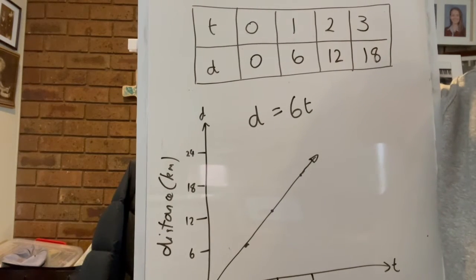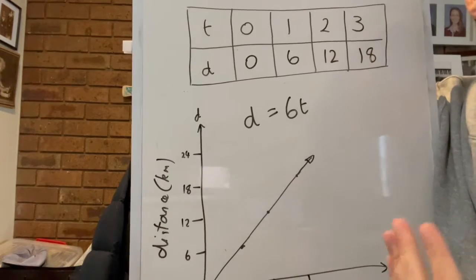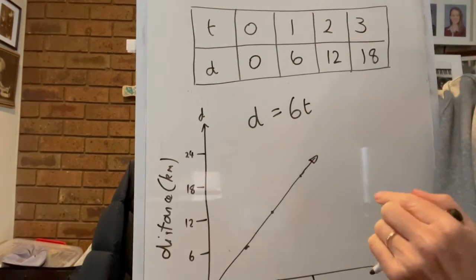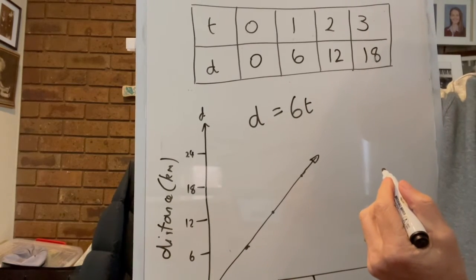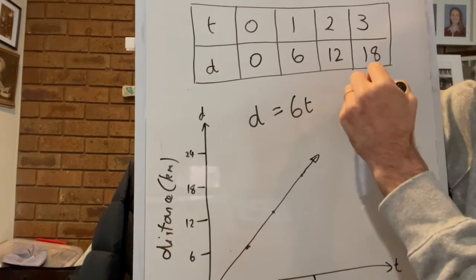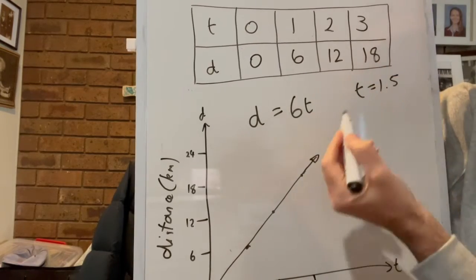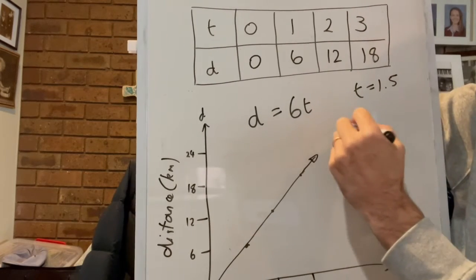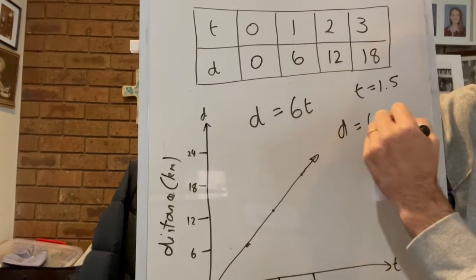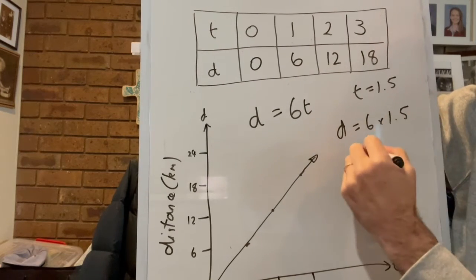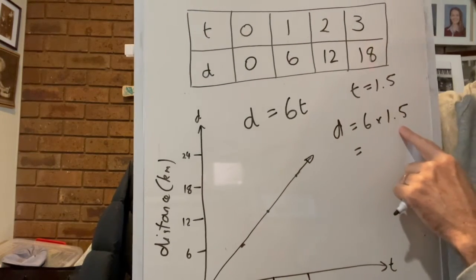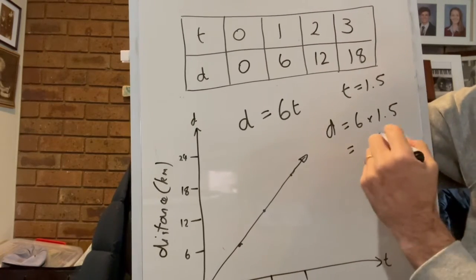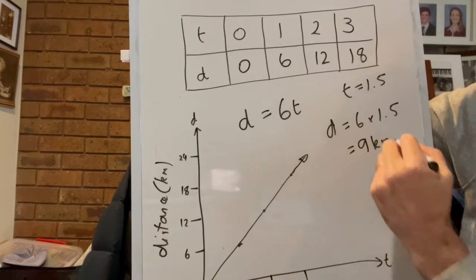It then gives us two other questions to answer where we're looking at either the value of t or the value of d. So it says basically if the time equals one and a half hours, what's the distance? So we can put this value into this rule. So that'll be d equals six times 1.5, and six times 1.5 will then give us our answer which will be nine kilometers.